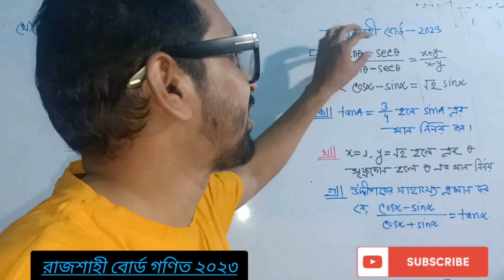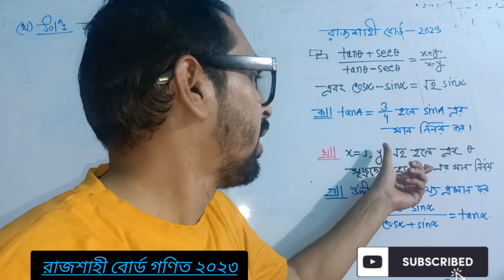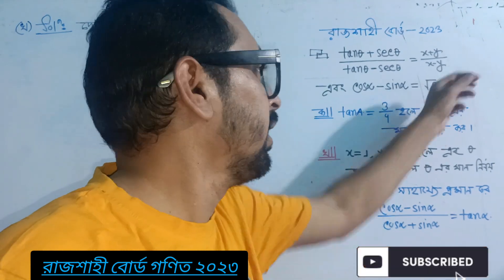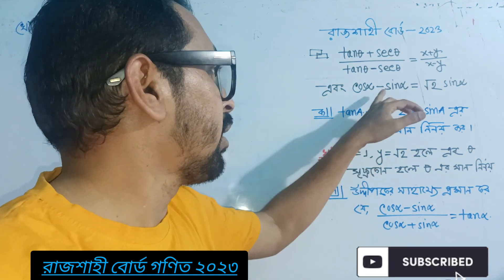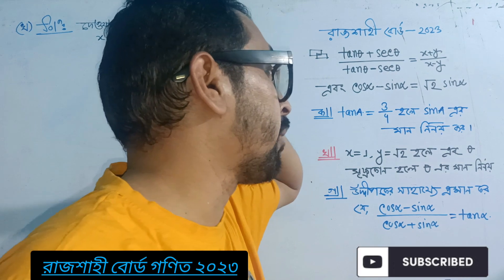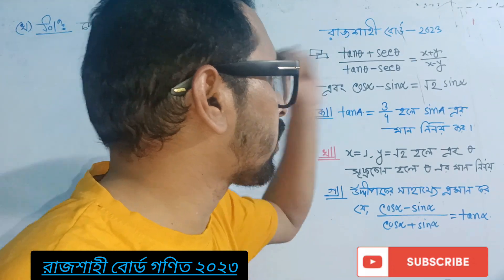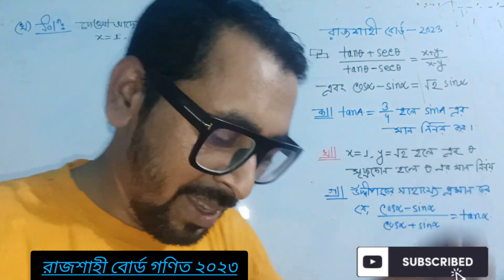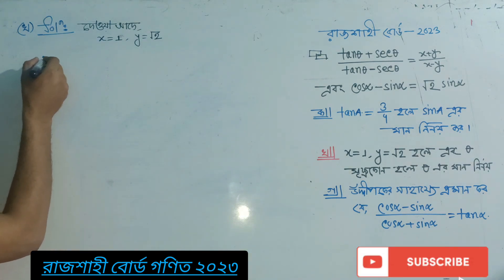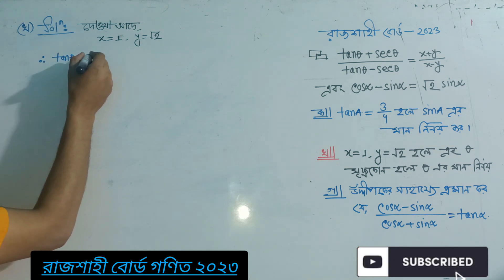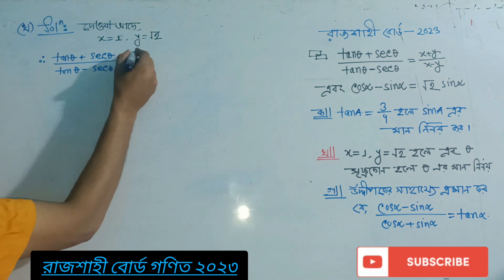So, tan theta plus sec theta divided by tan theta minus sec theta is equal to x plus y divided by x minus y. We don't need to do this in a complicated way because of the x and y format. The problem is that tan theta plus sec theta divided by tan theta minus sec theta is equal to x divided by y.